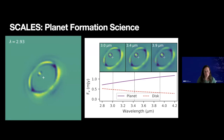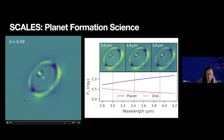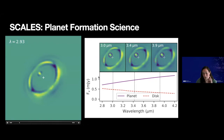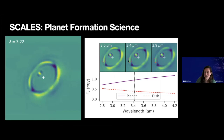As far as using SCALES for planet formation science goes, it's going to be really powerful. This animation shows a planet in a gapped protoplanetary disk as a function of wavelengths — from about 2.8 to 4.2 microns. What you can notice is that the disk becomes dimmer at long wavelengths, but the planet brightens. Looking at different wavelengths, you can see the planet becomes brighter and the disk becomes fainter. This will help us not only characterize planets, but also distinguish between light from the planet and scattered light from dust in your protoplanetary disk.